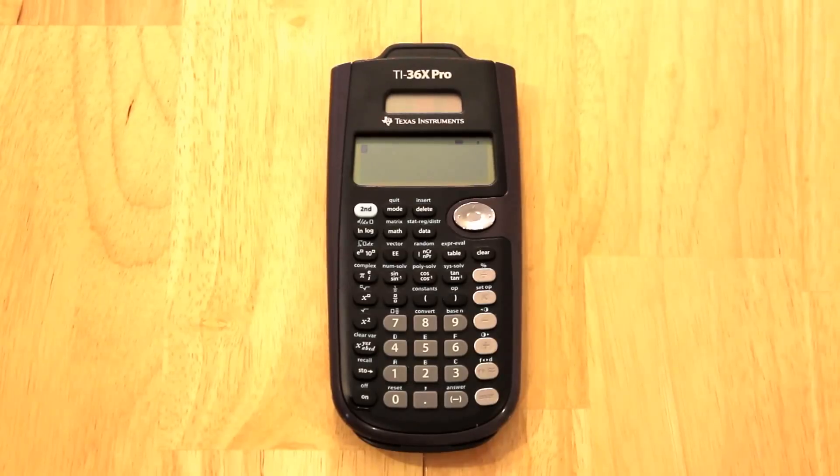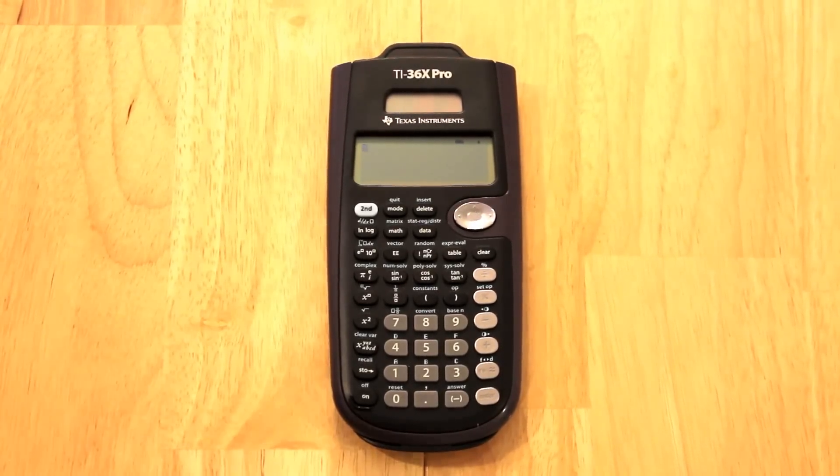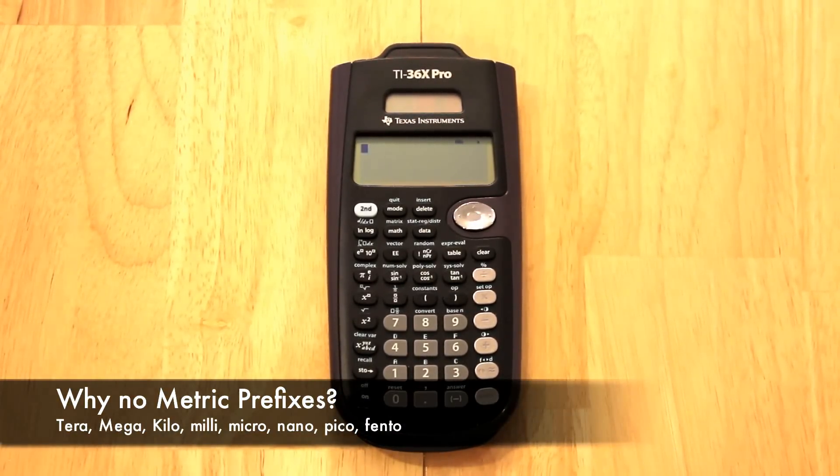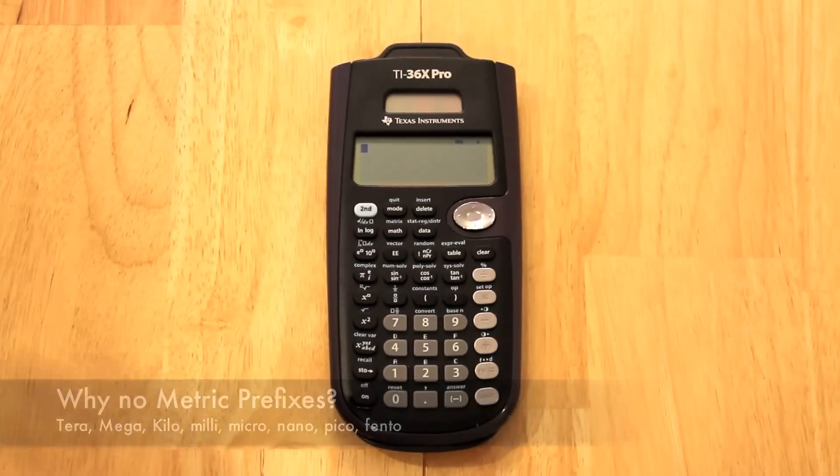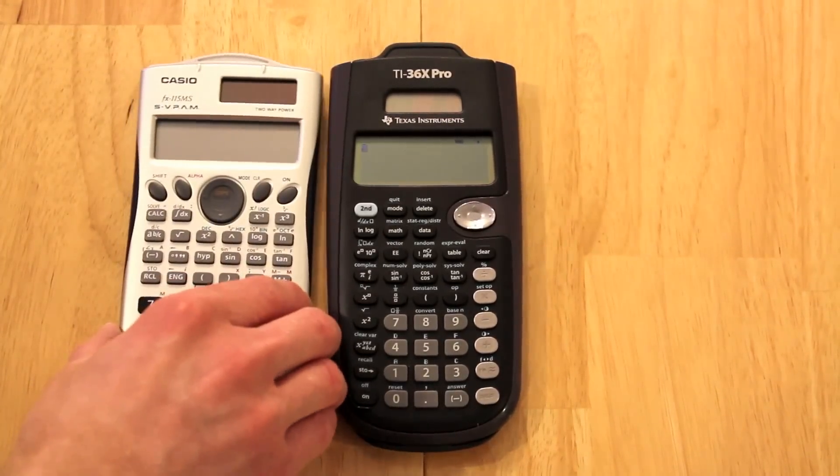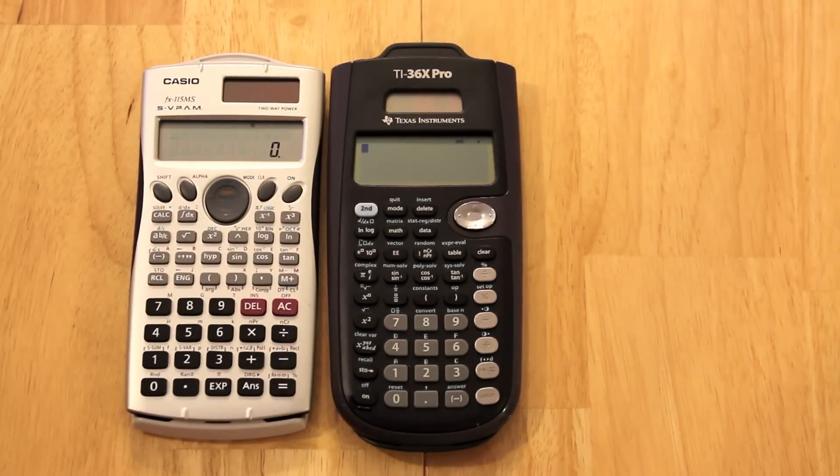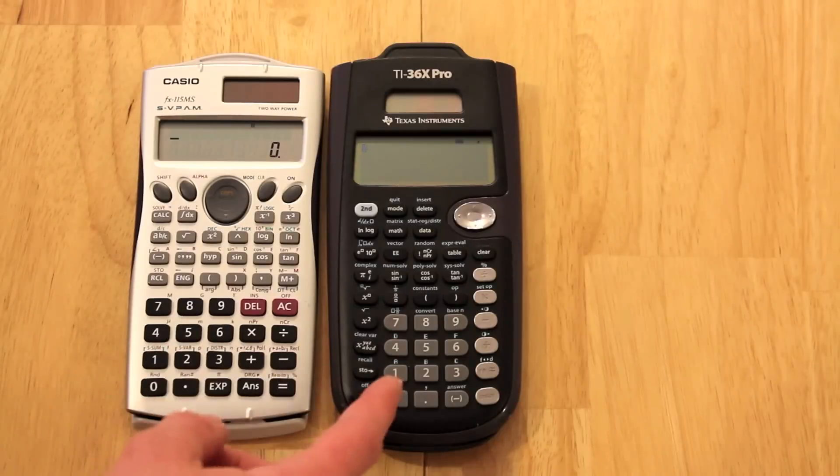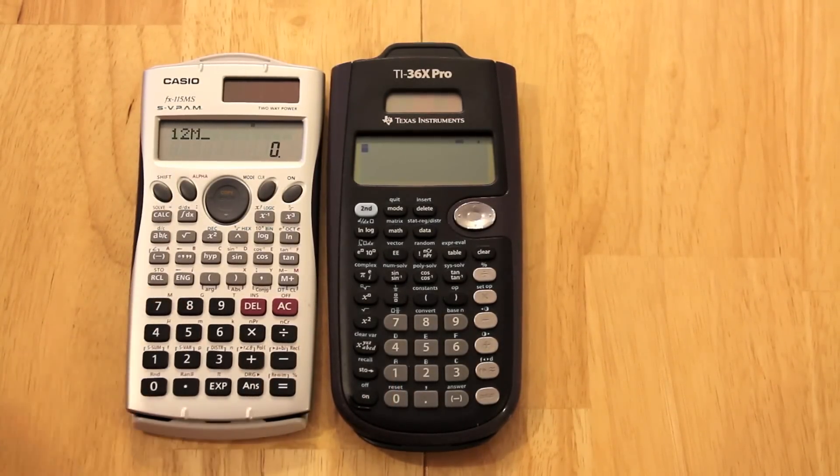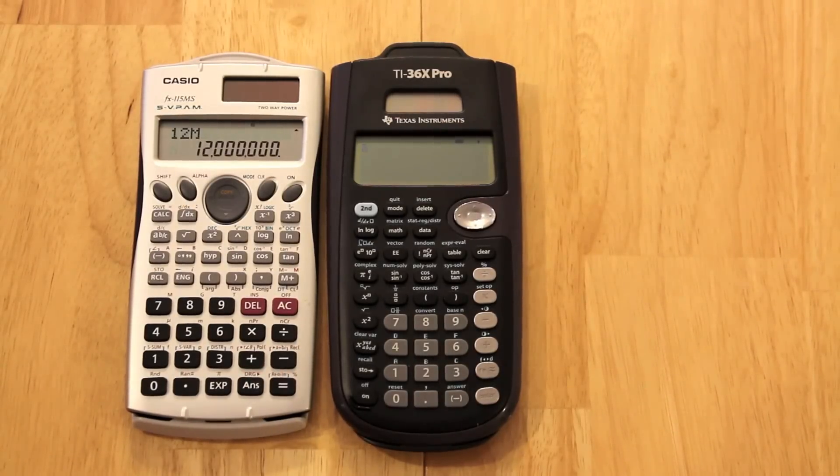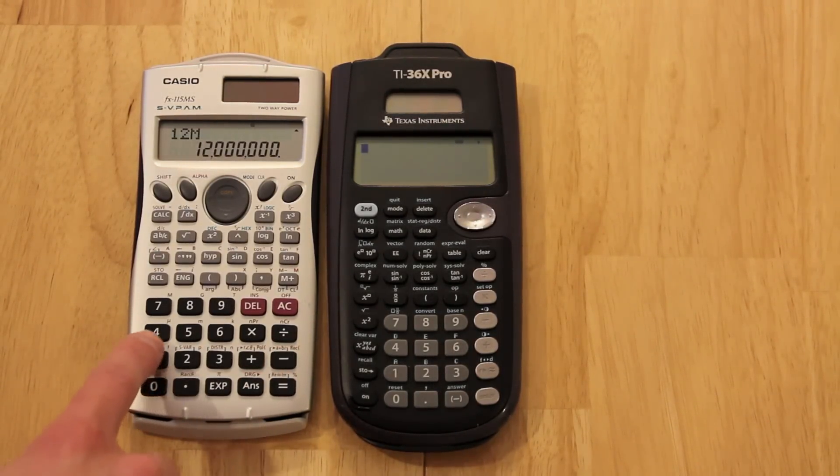Something that I wish the Texas Instruments had, that the older Casio models have, is the metric prefixes such as tera, giga, mega, kilo, milli, micro, nano, pico, and femto. And on the Texas Instruments, there's even an old Casio calculator. I hope you can see this. You can do, let's say if you wanted 12 megawatts, you can do 12 second 7 to get the mega symbol. And now, it's just like using the same thing as 12.